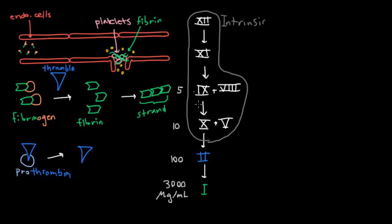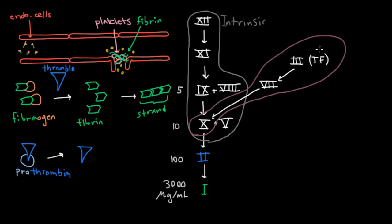But anyway, I said that this was the intrinsic pathway because there is another pathway which also leads to an activated 10, but in this other pathway what activates the 10 is an activated 7, which is activated by 3, also known as tissue factor. And I'll just write TF for tissue factor. And this pathway, which I'll circle here, and I apologize for the poor organization, this one is known as the extrinsic pathway.